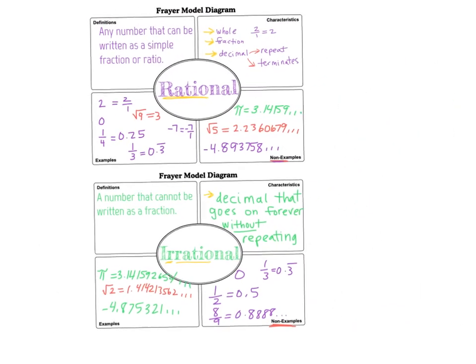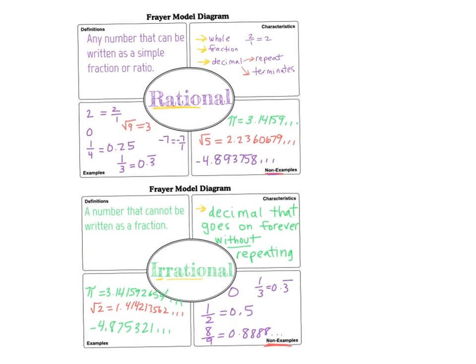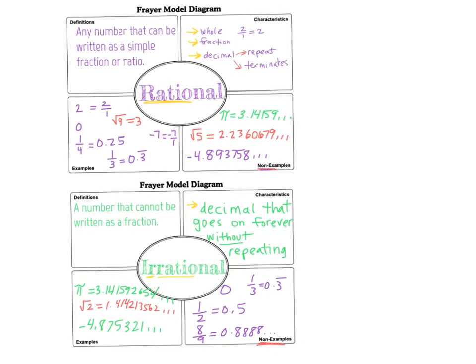Take a look at your two Freyer models. They should be all completed. And basically, if we're talking irrational, we're talking crazy. Like irrational behavior, irrational numbers. They never terminate, they never repeat. And then pretty much everything else, kind of our normal looking numbers or decimals that repeat or terminate, are rational.